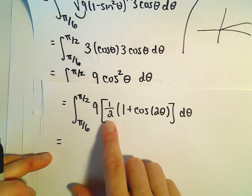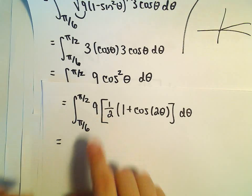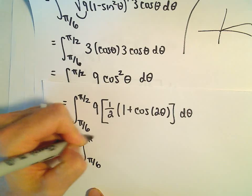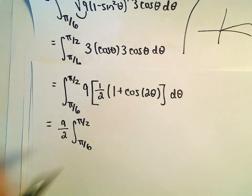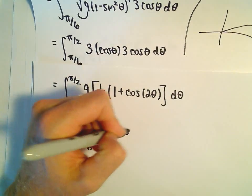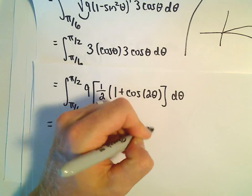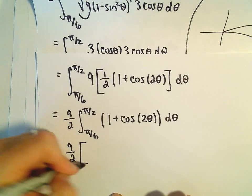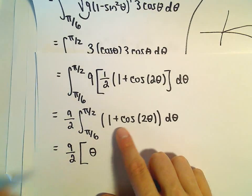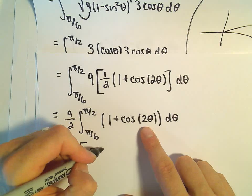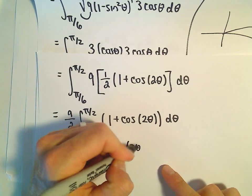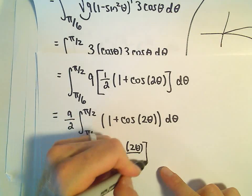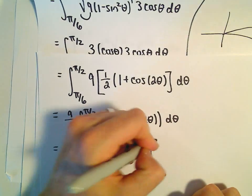We can pull the 1 half out and have 9 halves. I'm just going to pull that out front. So we have 9 halves, pi over 6 to pi over 2, and now we'll have 1 plus cosine of 2 theta d theta. This isn't terrible to integrate. We'll get a theta, and then the antiderivative of cosine 2 theta is going to be sine 2 theta over 2.